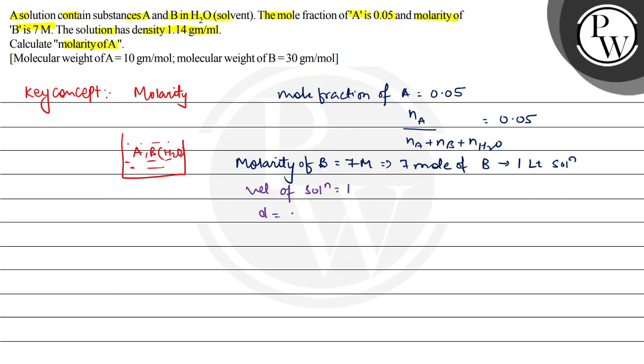So density is 1.14 gram per ml. So the weight of solution is 1.14 into 1 liter.